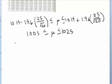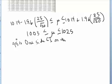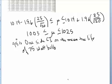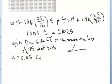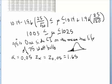Now we want the 95% one-sided lower confidence bound on the mean true life of the 75-watt bulb. In this case, alpha — our unacceptable error level — is 0.05. Now we're just going to calculate the z-score for alpha, because we're only doing one side. So it's z of alpha, z of 0.05.